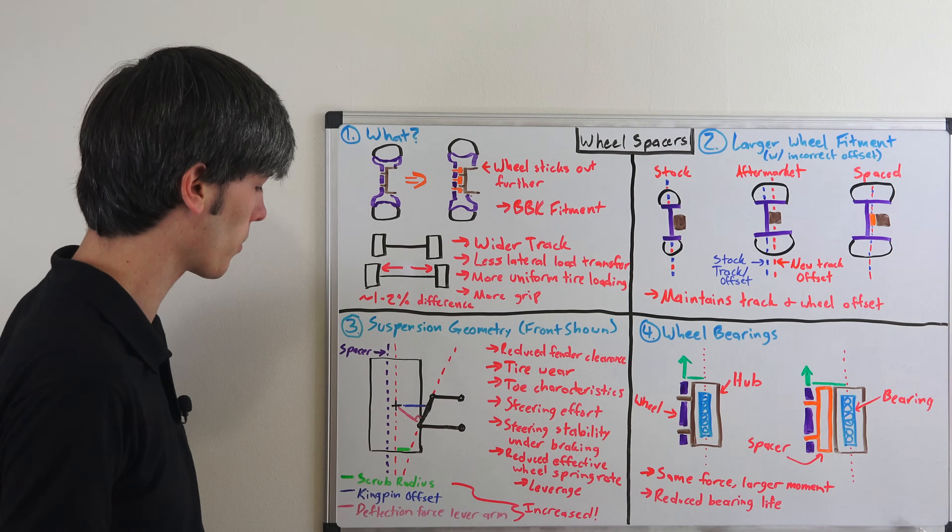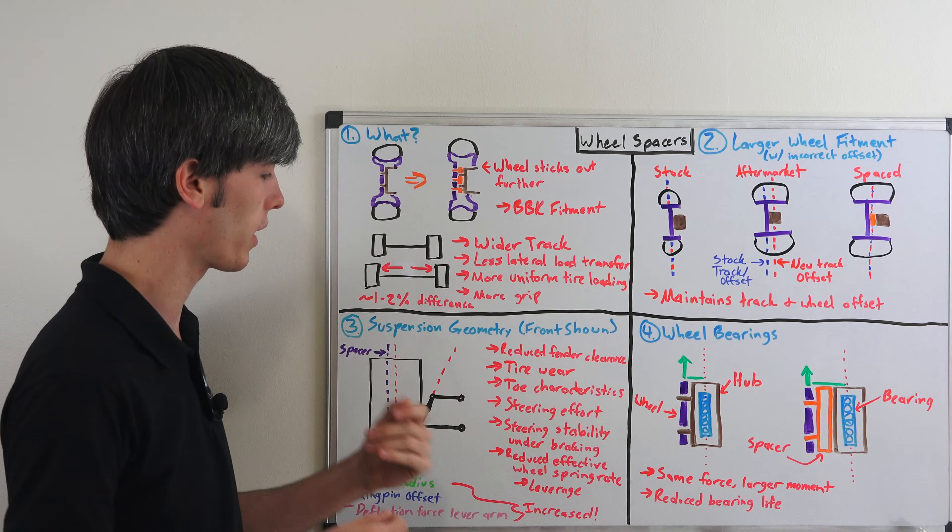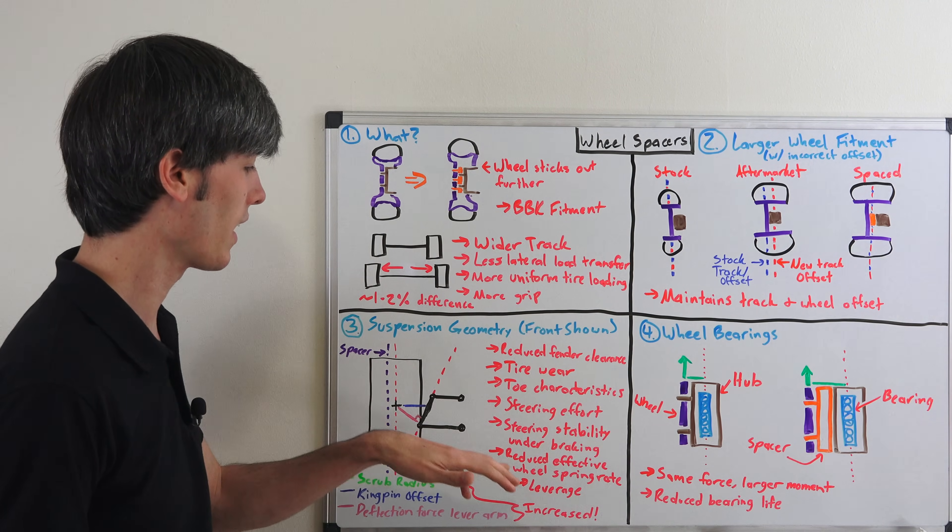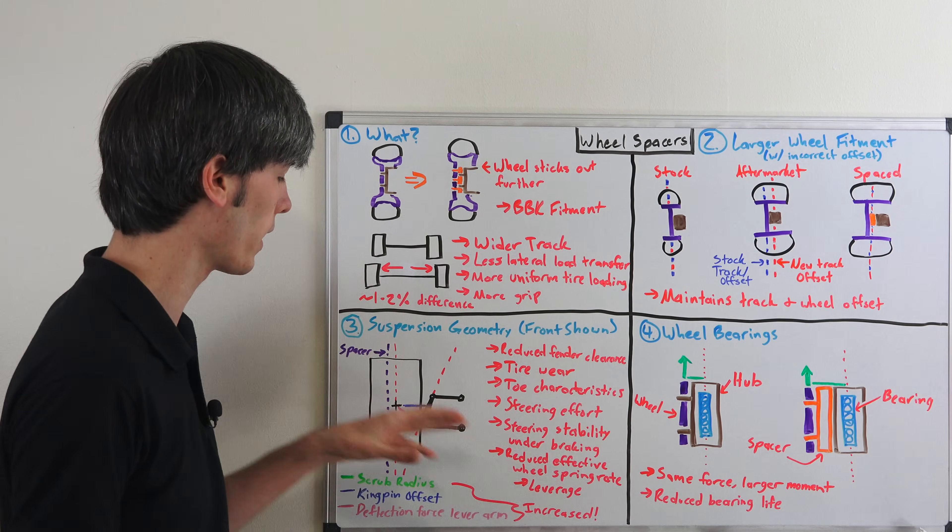And this comes down to the scrub radius. I have a video explaining why that is, why you would have less steering stability. And then also you can change the actual effective spring rate at the wheels.